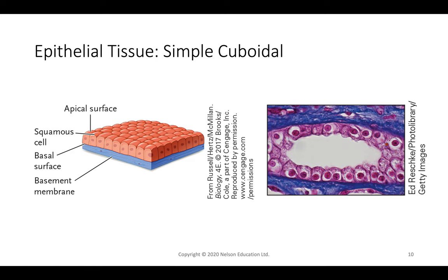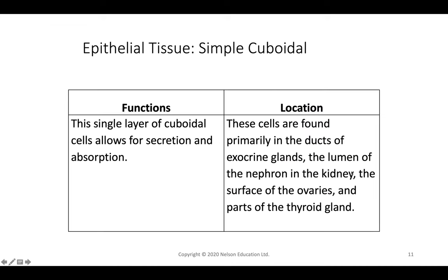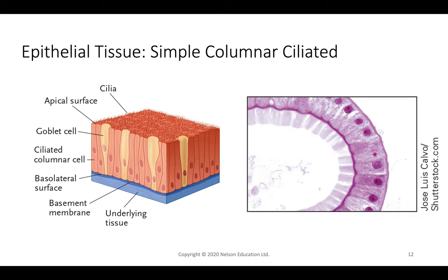Cuboidal tissue cells look like perfect little cubes with nuclei in roughly the same area — simple cuboidal. They are found inside exocrine glands, the lumen of the kidney, the ovaries, and parts of the thyroid. A single layer of cuboidal cells allows for secretion and absorption of biomolecules.